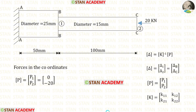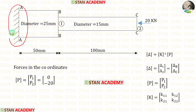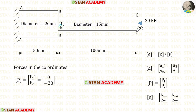Before making the analysis, let us establish the coordinates. This bar has three sections: AA, BB, and CC. The end AA is fixed, so there will be no displacement there. Displacements will occur at BB and CC. We place the first coordinate at section BB and the second coordinate at section CC, since only these two sections will have displacement.